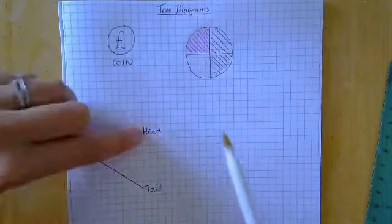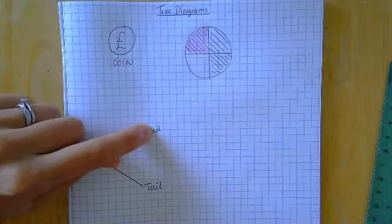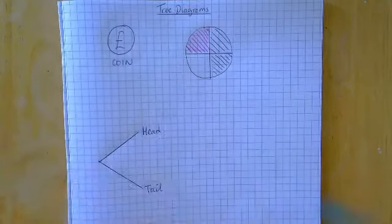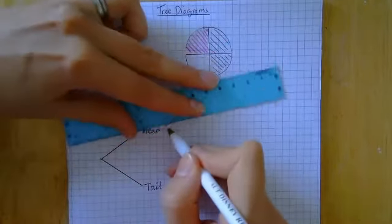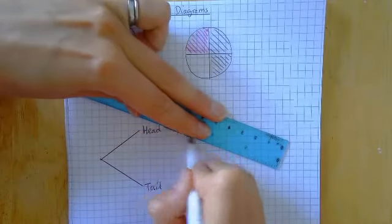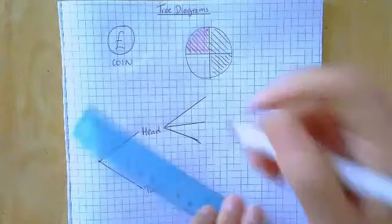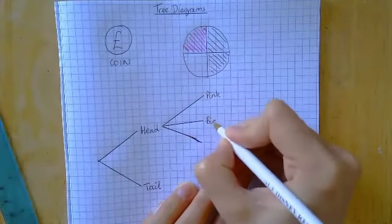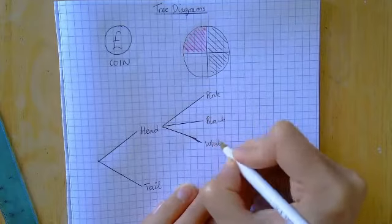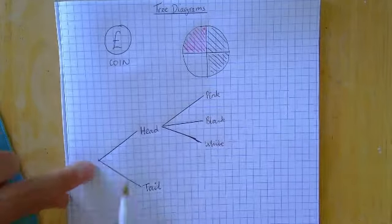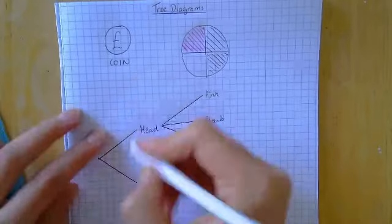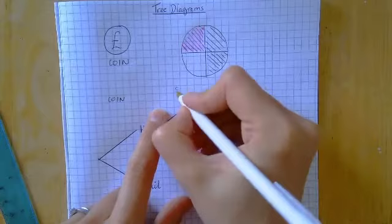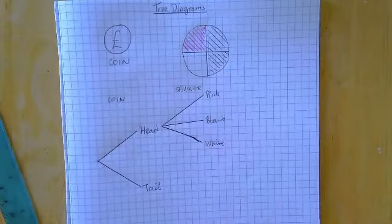So let's say I got a head. Now I'm going to spin my spinner and I've got three options — I could get a black, I could get a pink, or I could get a white. Coming off the head branch, I need three branches because there are three options. These first branches belong to the coin, and these branches belong to the spinner.